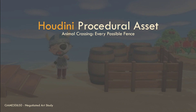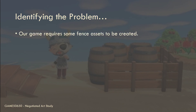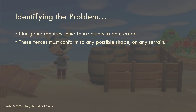It's quite a bold claim, I know. So let's jump into it. The first thing we're going to do is identify a problem — a game design or game art challenge that we need to solve. In this hypothetical scenario, our game requires some fence assets. These fences must conform to any possible shape, whether a player places them at runtime or a level designer places them in Unreal, without having to modify any points, vertices, or primitives — the procedural system takes care of itself.